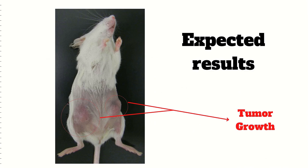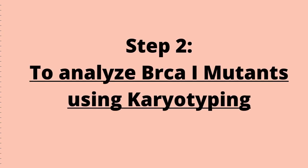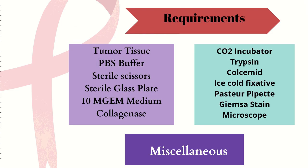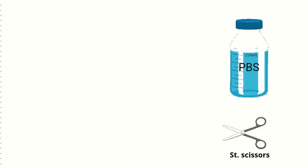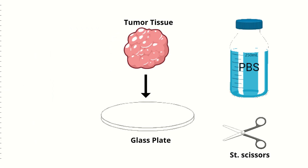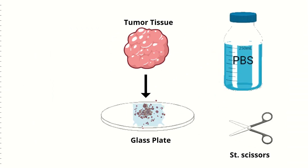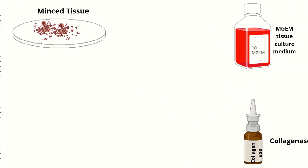Expected results for the tumor growth are as follows. The last step of this experiment is to analyze the BRCA1 mutants using chromosomal karyotyping. For this step, you require tumor tissue from the mice, PBS buffer, colcemid, MGM medium, and miscellaneous apparatus. First, you mince the tumor tissue with sterile scissors and soak it in PBS buffer. You then add the minced cells to an MGM culture medium plate infused with collagenase, which breaks down collagen in cells.